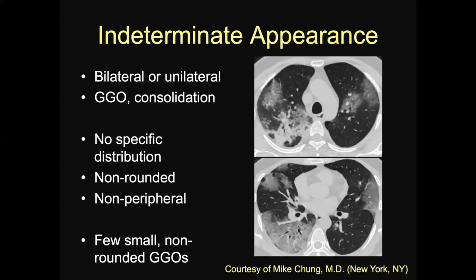This is another case where the distribution is not as quite peripheral. You see a lot of peribronchial consolidation in the right upper lobe, peribronchial ground glass opacity in the left upper lobe, and the upper portion of the right lower lobe is pretty diffusely involved with just a little bit of sparing. So it has some of the typical features but not enough to call it the classic appearance. So this is another indeterminate appearance.